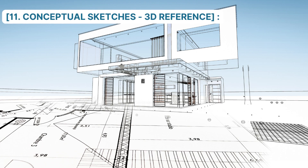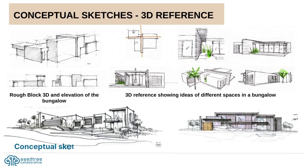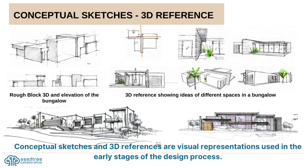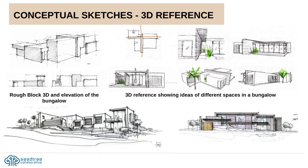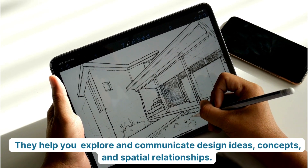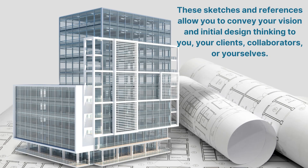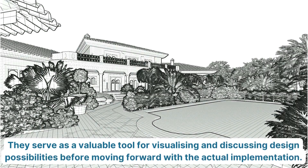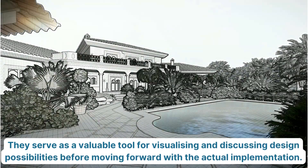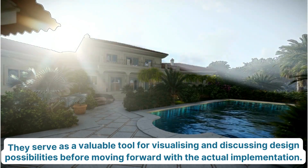Number 11: Conceptual Sketches and 3D References. Conceptual sketches and 3D references are visual representations used in the early stages of the design process. They help you explore and communicate design ideas, concepts, and spatial relationships. These sketches and references allow you to convey your vision and initial design thinking to your clients, collaborators, or yourselves. They serve as a valuable tool for visualizing and discussing design possibilities before moving forward with the actual implementation.